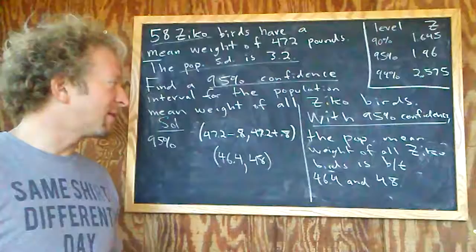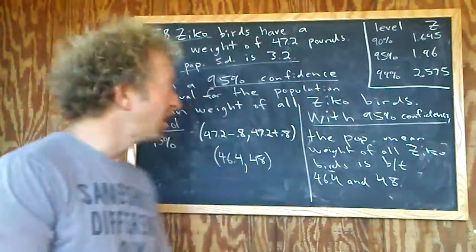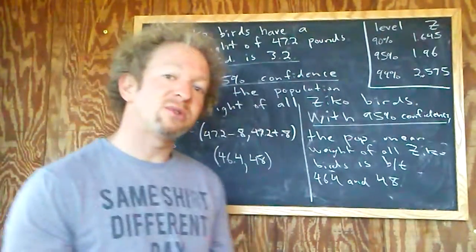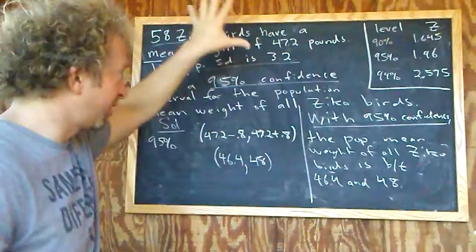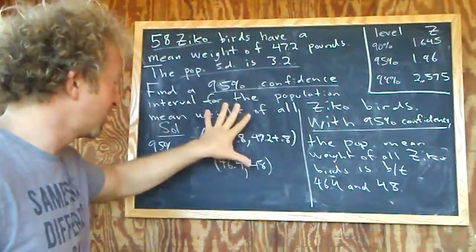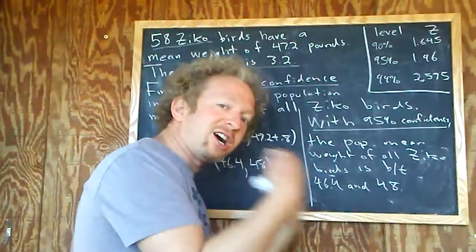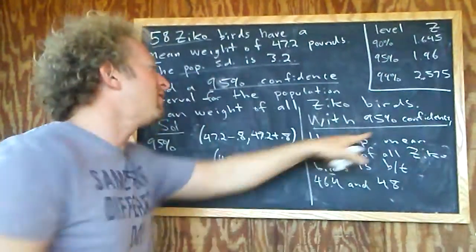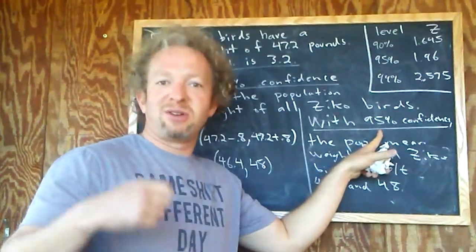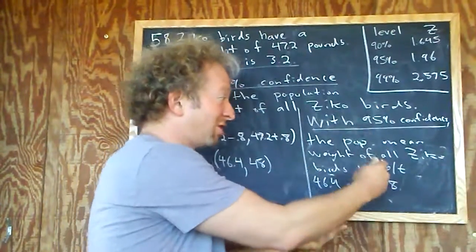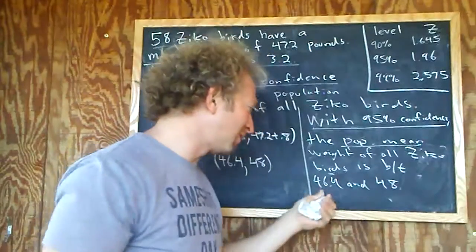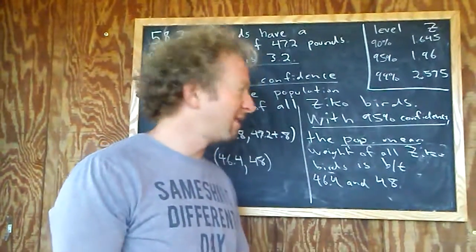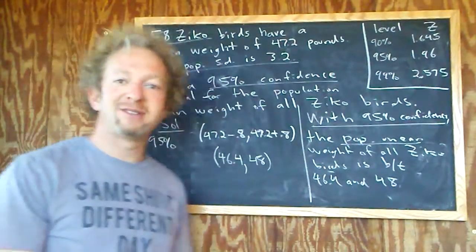So start by mentioning the confidence level, go to the last sentence, and then just say is between these numbers here. What does this mean? A couple of ways to think about it, the easiest way is as follows: If you do this a hundred times, what's going to happen? You're going to get a hundred different answers, a hundred different numbers. 95 of those times the answer is correct. In other words, your interpretation is correct: the actual mean weight of all the Zika birds in the entire world is going to be between these numbers.